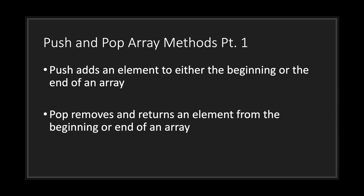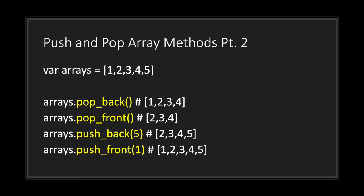One cool thing about GDScript is that arrays come with methods. You have the push method and the pop method. The push method adds an element to either the beginning or the end of an array; the pop method removes and returns an element from the beginning or end. For example, pop_back removes the last element of the array. In our example the array had values one through five, and after pop_back it only has four values — the five is removed.